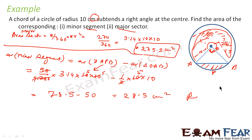Very simple — just straightforward implementation of the formula. You have this triangle, you have this radius, you have this segment. Find area of segment: area of segment equals area of sector minus area of triangle.